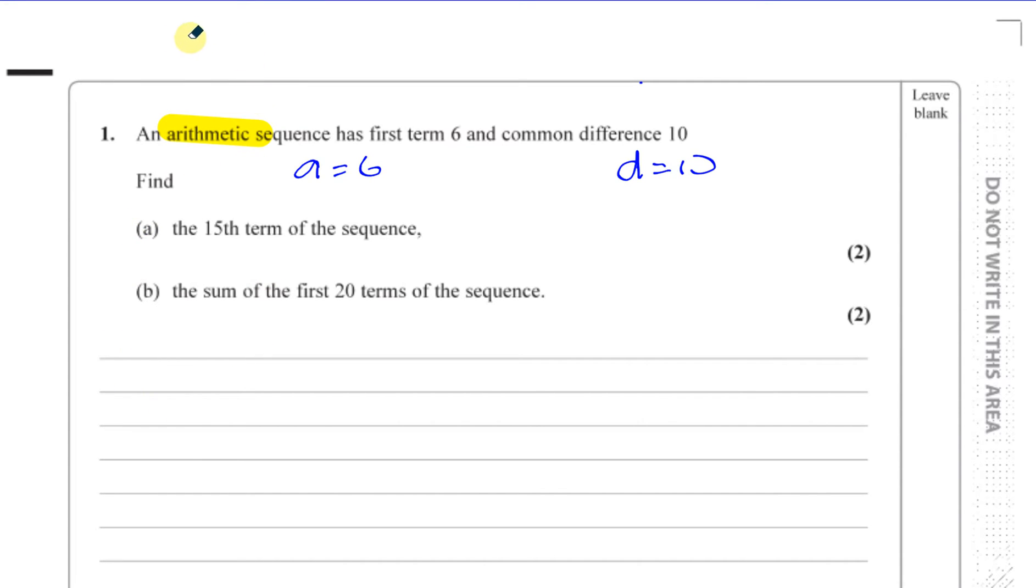There are two formulas that are actually on the formula book even if you forget them, but after doing lots of practice you probably won't need to look at it. The formula for finding a particular term in sequence is given by un, means the term that you want, is a plus n minus 1 times d. And the sum of the first n terms is n over 2 times 2a plus n minus 1 times d.